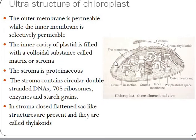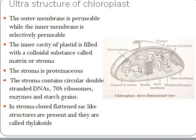The outer membrane of the chloroplast is permeable and will allow the passage of molecules, while the inner membrane is selectively permeable or impermeable to many molecules. The inner cavity of the plastid is filled with a colloidal substance called the matrix or stroma. Stroma is a jelly-like proteinaceous material. Within the stroma, there is circular double-stranded DNA called chloroplast DNA, 70S ribosomes, enzymes, and starch grains.